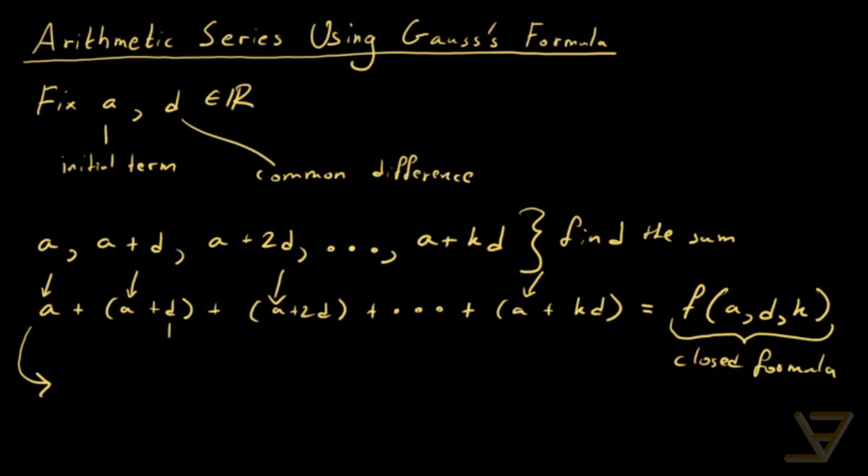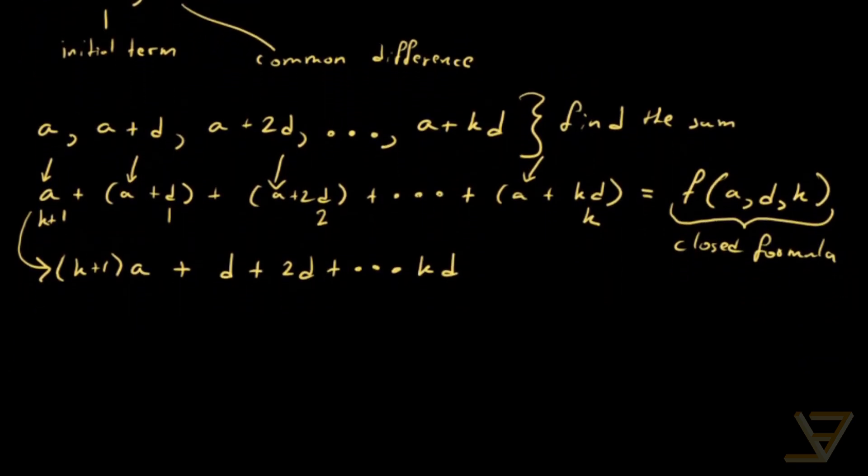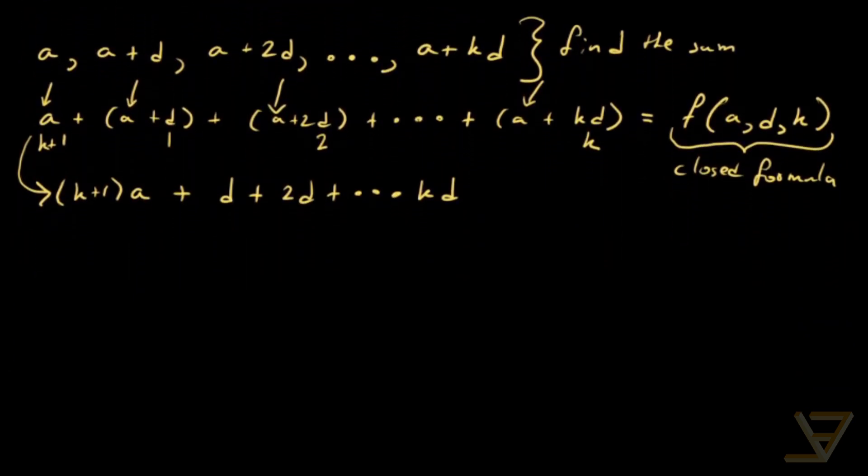We have 1, 2, we're looking at the coefficients of D, all the way through to K. And over here we have a K plus 1th term. So there's K plus 1 copies of A, plus we have D plus 2D, all the way through to KD. And we can write this again in a slightly more simplified form by factoring out the D. So we get D times 1 plus 2, all the way through to K.